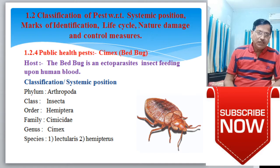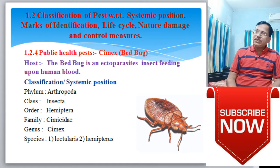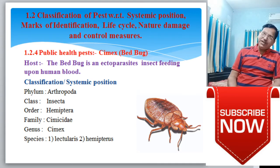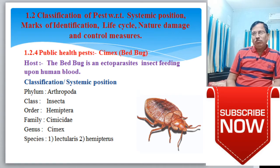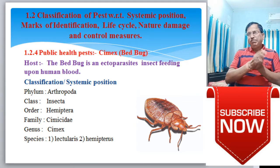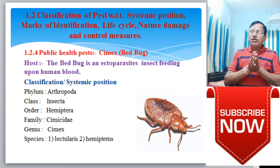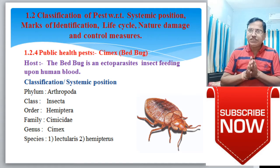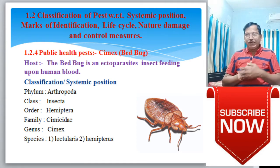In the previous lecture, we discussed veterinary pests. Veterinary pests are those pests which carry disease from one living organism to another organism; they are also called carriers of disease. Similarly, public health pests are that specific type of pest or insects which contact the public and transmit specific diseases from human being to human being.